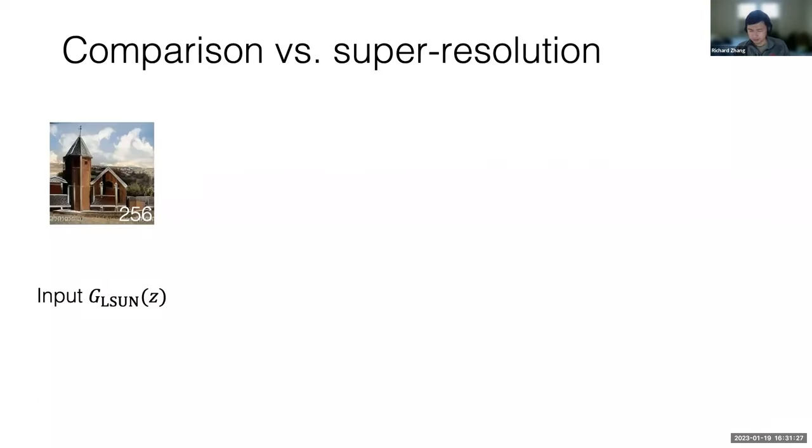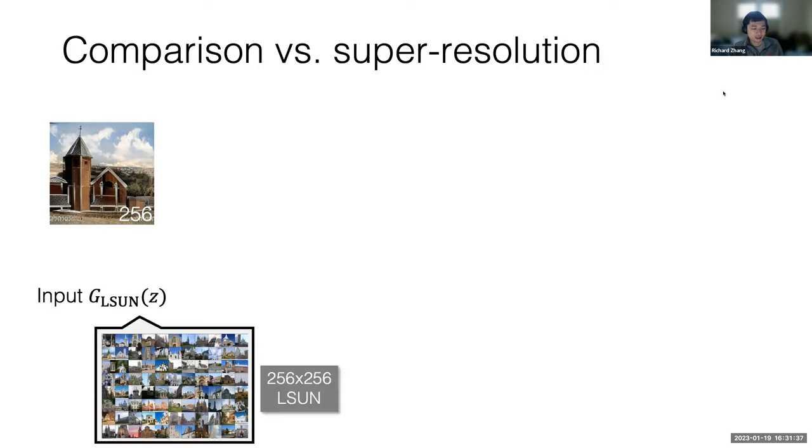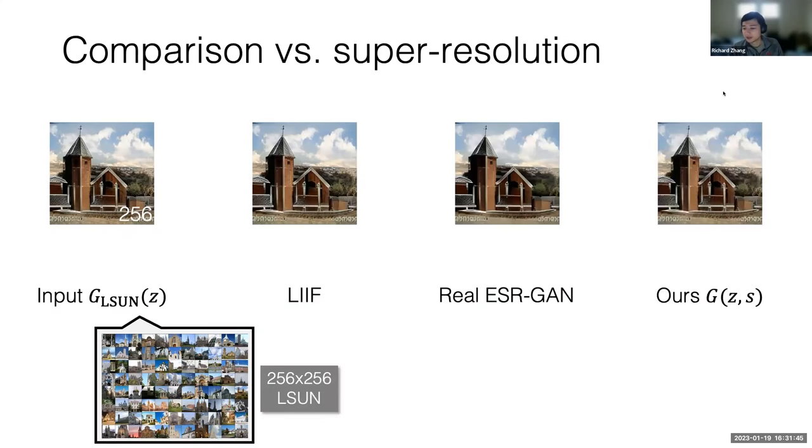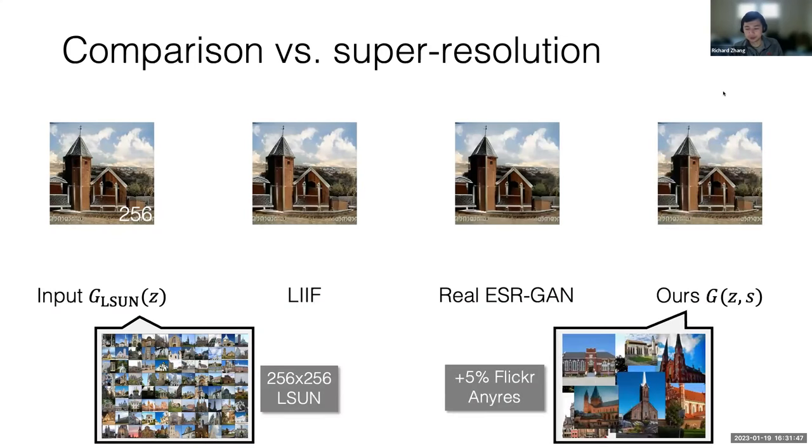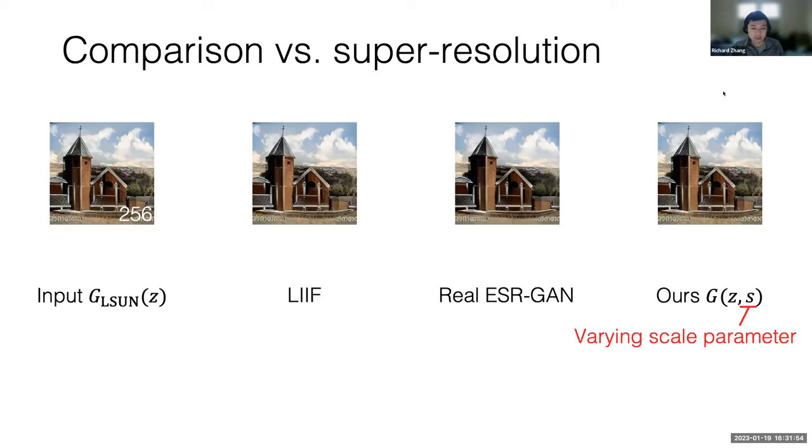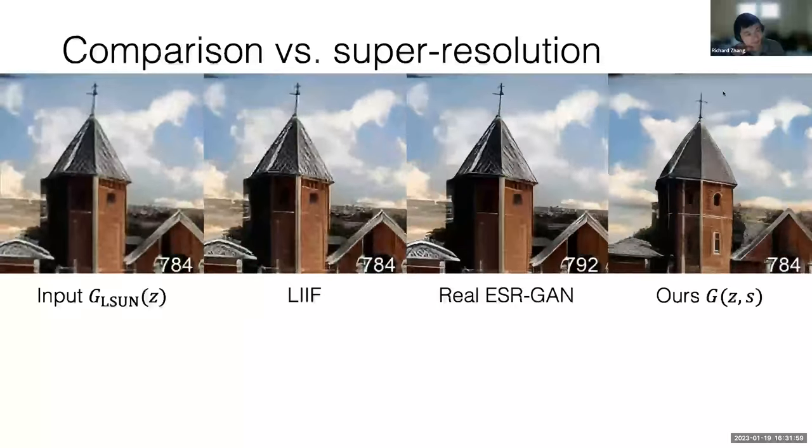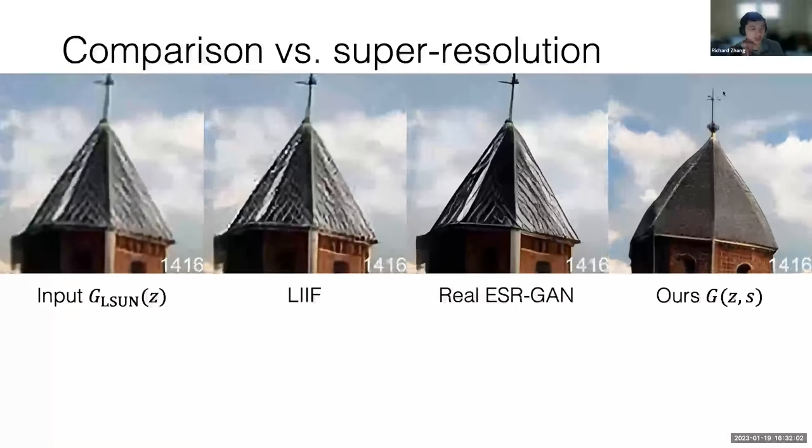One comparison we made was super resolution, because that's actually one way that you could potentially get high resolution generations. You can take a low resolution GAN. For example, here you can run it through super resolution algorithms like LIF, REALESRGAN. We can compare that to our method, which has a little bit of high frequency data from high resolution data sprinkled in. We can zoom in here and compare between them. We see some interesting behavior. If we look at the roof line, we see that the input image here has some of these weird artifacts. Actually, I was unsure why this is, but it turns out, this is just JPEG artifacts from the training set. It's actually very bad.